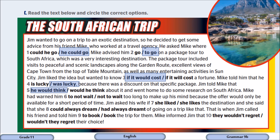Mike had warned him not to wait too long to make up his mind, because the offer would only be available for a short period of time. Jim asked his wife if she liked the destination — 'if she likes' is wrong because this is reported, not direct. She said that she had always dreamt of going on a trip. Jim then called his friend and told him to book. Mike informed Jim that they wouldn't regret their choice — not 'wouldn't they regret', because this is a reported statement, not a direct question; we cannot use inversion.